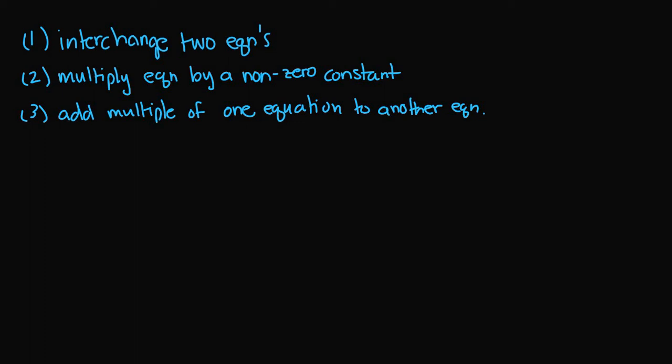When we were converting systems of linear equations into equivalent systems in previous lessons, we were able to use certain operations to manipulate the systems. We could use three rules: the first was we could interchange two equations, the second was we could multiply one equation by a non-zero constant, and the third was we could add a multiple of one equation to another equation.